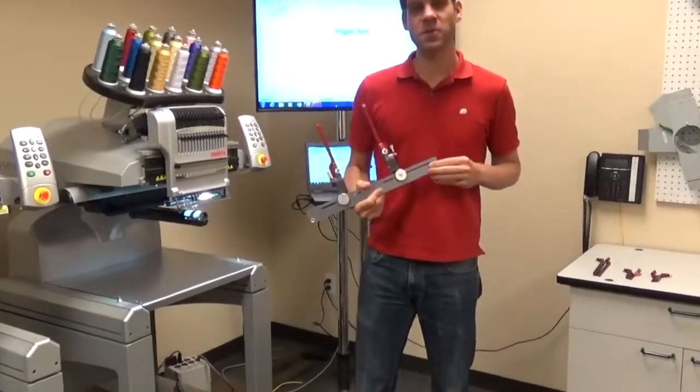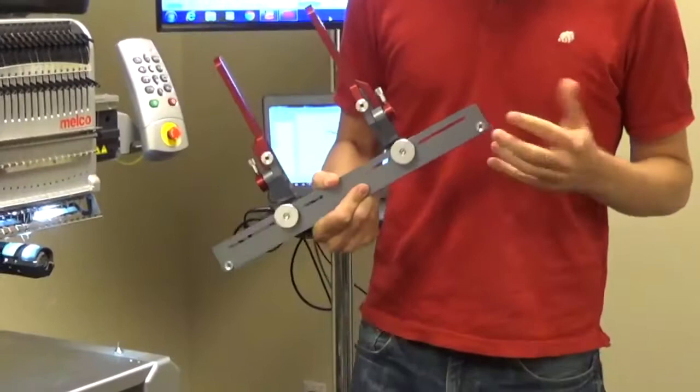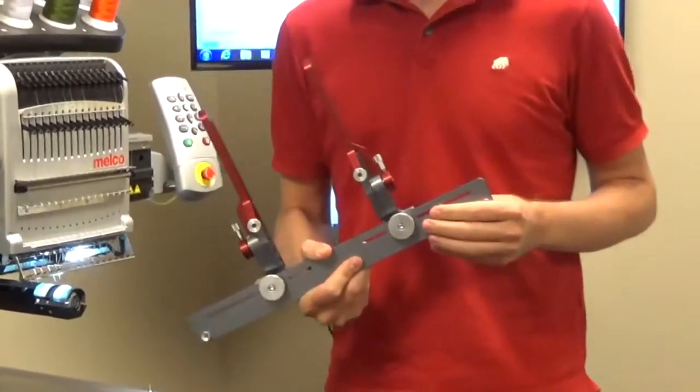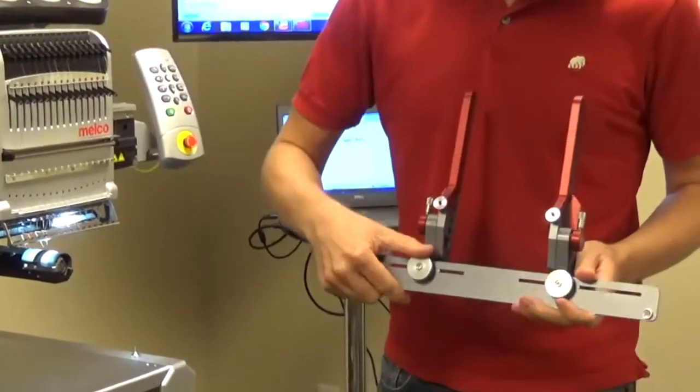It is a very adjustable system for those less than conventional items like dog collars, leashes, hat brims, whatever you can think of. Anything that's not going to hoop well can clamp and that will be really handy for you.